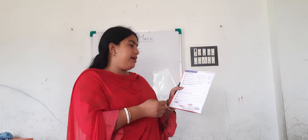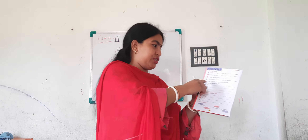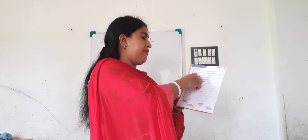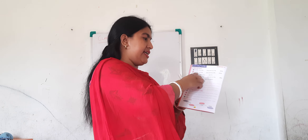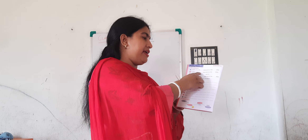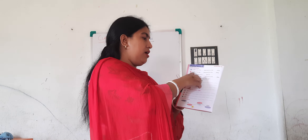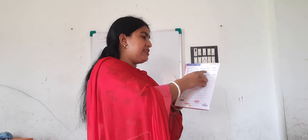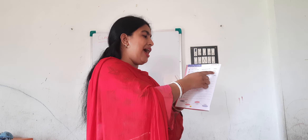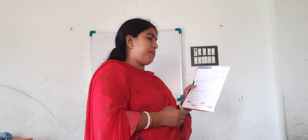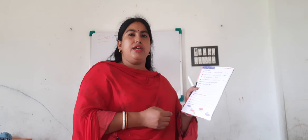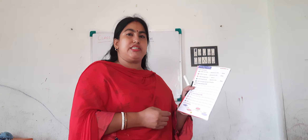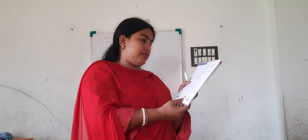Similarly, in the next question — in 5796, 7 is in the hundreds place and 6 is in the ones place. In the same way, you have to write the place value of the numbers.